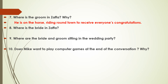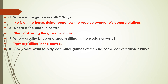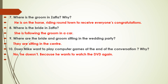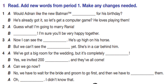Number seven: where is the groom in Zaffa, and why? He is on the horse riding around town to receive everyone's congratulations. Number eight: where is the bride in Zaffa? She is following the groom in a car. Number nine: where are the bride and groom sitting in the wedding party? They are sitting in the center. Number ten: does Mike want to play computer games at the end? No, he doesn't — because he wants to watch the DVD again.